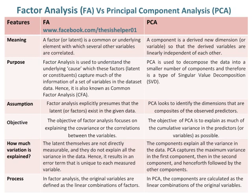Factor Analysis explicitly presumes that the latent factors exist in the given data. Whereas PCA looks to identify the dimensions that are composites of the observed predictors. The objective of Factor Analysis focuses on explaining the covariance or the correlations between the variables. Whereas the objective of PCA is to explain as much of the cumulative variance in the predictors, or variables, as possible.